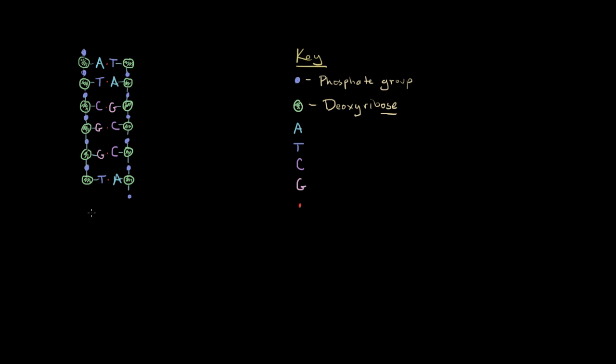The uprights of the ladder are actually rather boring. They're just there for structure. They don't actually provide any information. The interesting part are the rungs or bases of the ladder, and there are four chemical bases.